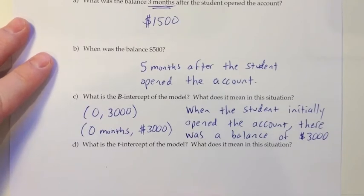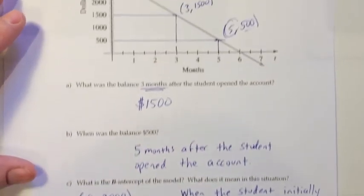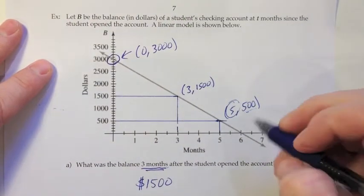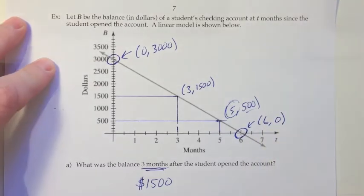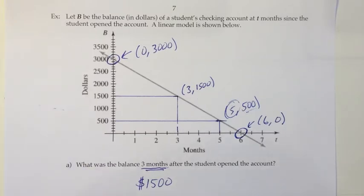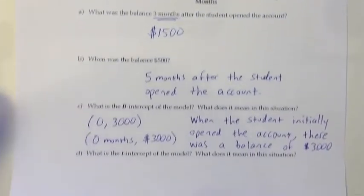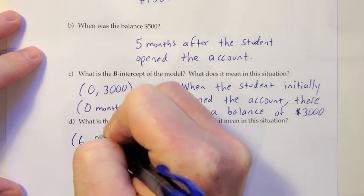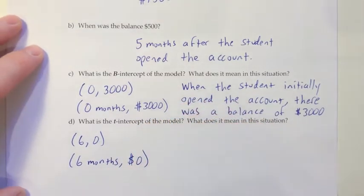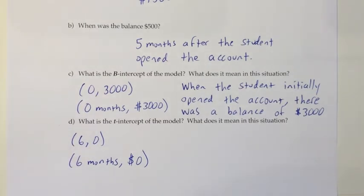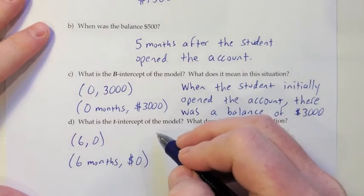And then the final question is, what is the t-intercept of the model, and what does that mean in this situation? So the t-intercept would be the place where our model intersects the t-axis. So that looks like this spot right here would be the t-intercept. And that is over 6 and up 0. So just as an ordered pair, it looks like it's (6, 0). And then we'll think about the units and making an interpretation of that one as well. That would be 6 months and $0. So $0 means that the student has run out of money. And it looks like it took 6 months for that to happen. So 6 months after the student opened the account, their balance was 0 or they were out of money.